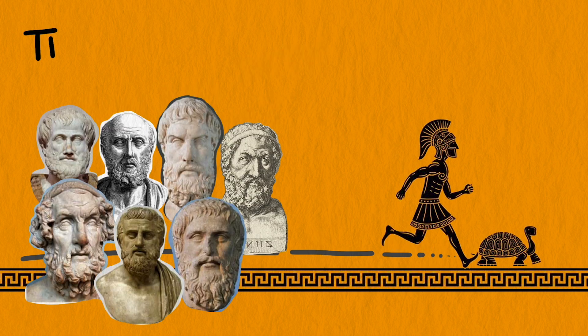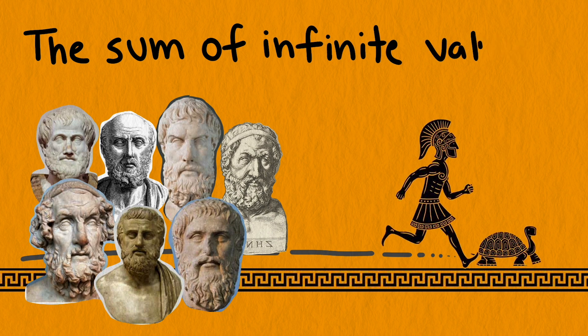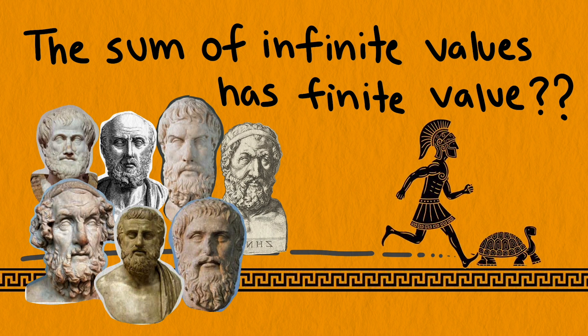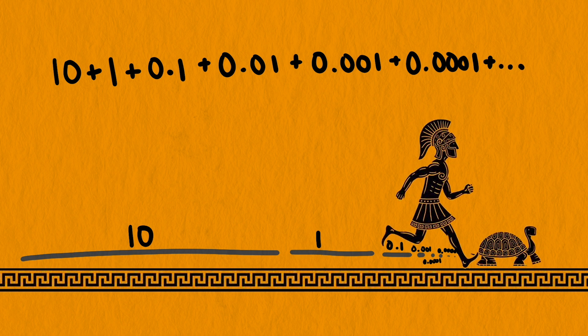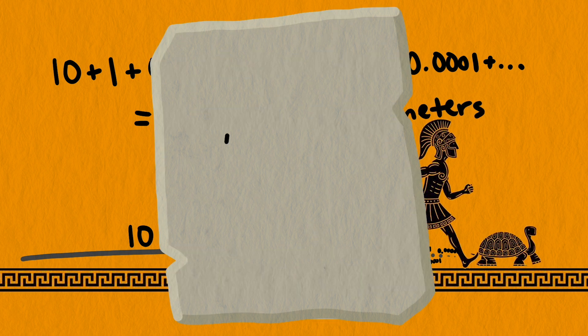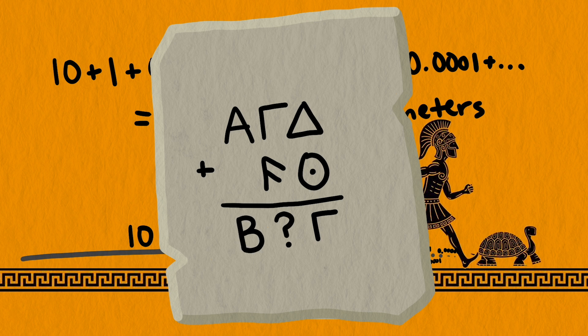The trouble the Greeks had was trying to come to grips with the fact that adding up infinitely many positive values can still sum to a finite value. Our notation makes it easy to know exactly how far Achilles would run to reach the tortoise. 10 plus 1 plus 0.1 plus 0.01 plus 0.001, etc. is 11.111 repeating, or 100 divided by 9 meters. But the Greeks did not have such nice numeric notation or the mathematical tools to handle the sum of a converging series.